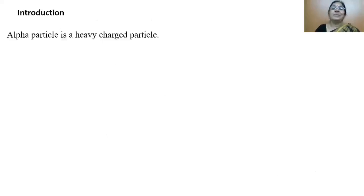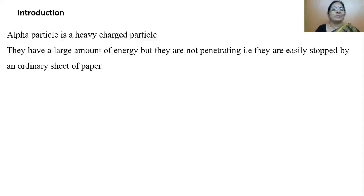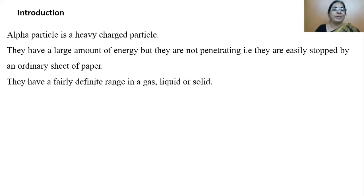Let me say something about alpha particles. An alpha particle is a heavy charged particle as it contains two protons. They have a large amount of energy but they are not penetrating — these alpha particles could be easily stopped by an ordinary sheet of paper. They have a fairly definite range in a gas, liquid, or solid.